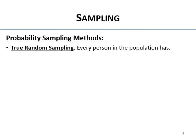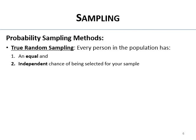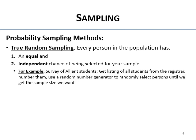Let's talk about probability sampling methods — the ones you'd want to use if you want to generalize opinion research to a large population. The most simple is true random sampling. This is when every person in the population has an equal and independent chance of being selected into your sample. For example, if you're surveying Alliant students, get a listing of all students from the registrar, number them from one to whatever, and use a random number generator to randomly select persons until you reach your needed sample size.